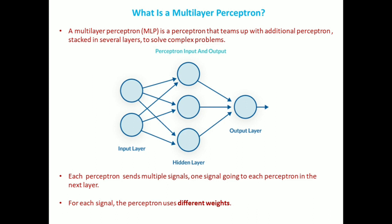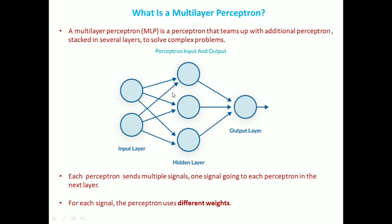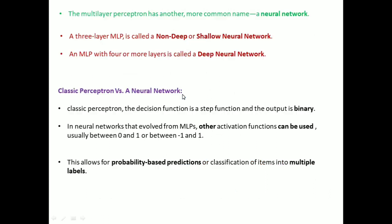This multi-layer perceptron has another more common name — we call it a neural network. A three-layer MLP is also called a non-deep neural network or shallow neural network, whereas an MLP with four or more layers is called a deep neural network.